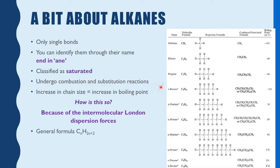Alkanes undergo combustion and substitution reactions. A property of alkanes is that as you increase them in chain length, so does the boiling point increase. If we have a look at methane, its boiling point is negative 162 — that is a very low boiling point. Whereas if we were to look at heptane, it's a larger molecule and its boiling point is 98. This is due to London dispersion forces. Every molecule has intermolecular dispersion forces. As we increase in chain length, so too do the dispersion forces. The more that you have, the greater force, the stronger they are held together, so the more energy you need to pull them apart. That's what boiling is.